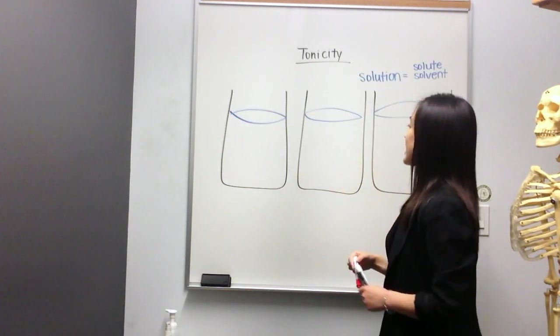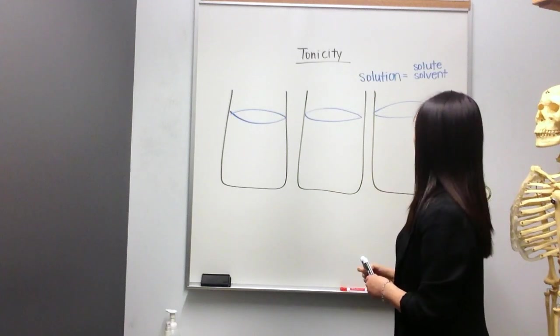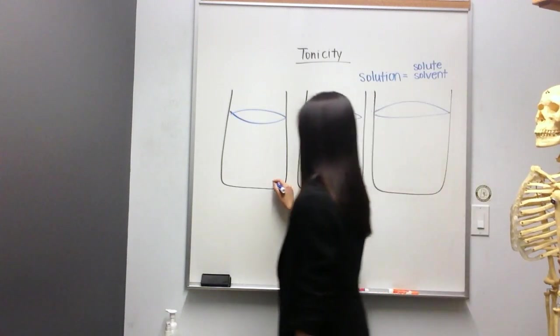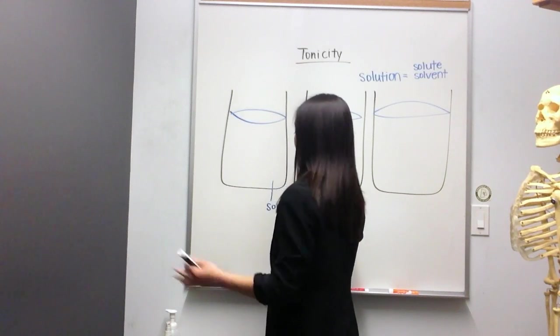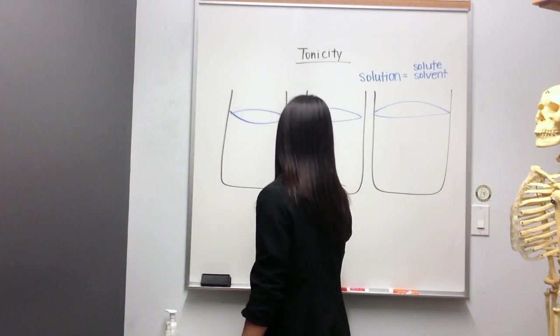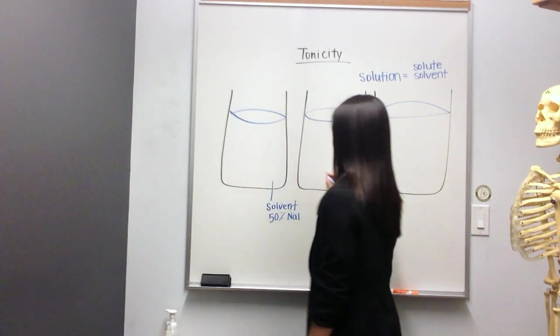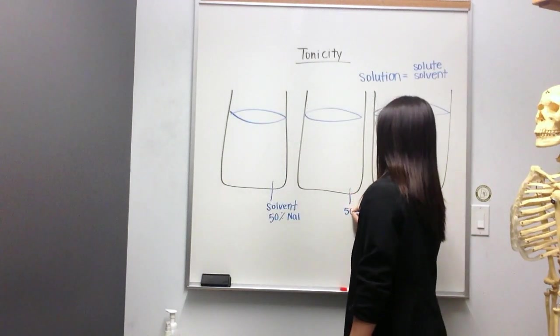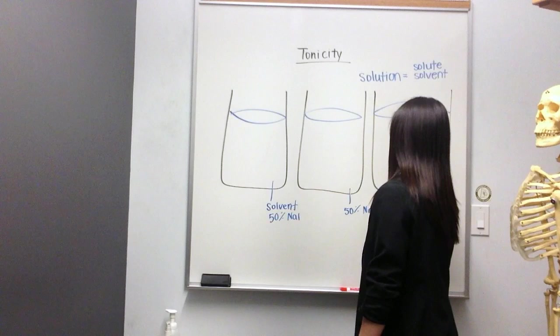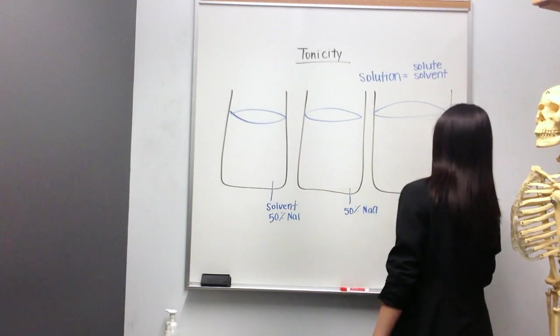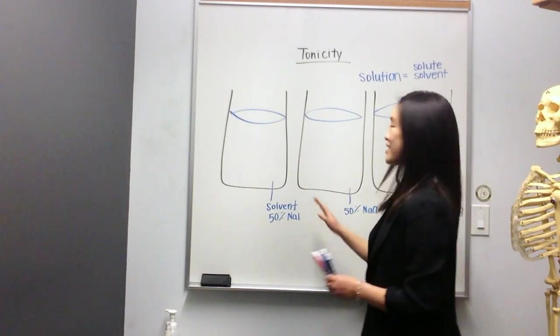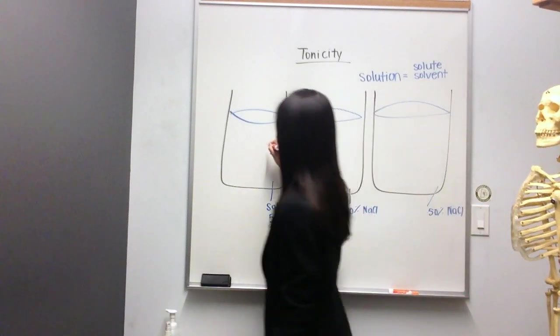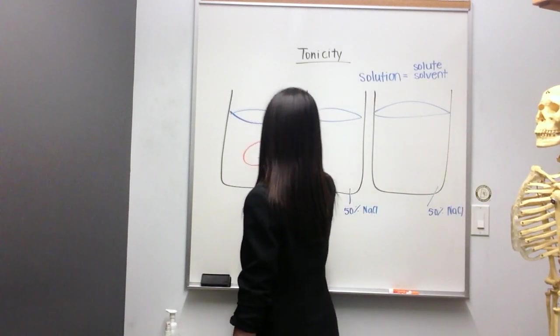Within these, let's say that all three of these solvents, the solvent is, I'll make up a number here, let's say 50% NaCl. So this is also going to be 50% NaCl, and this is also 50% sodium chloride. And within each of these, I'm going to draw a cell. In this example, it's going to be a blood cell.